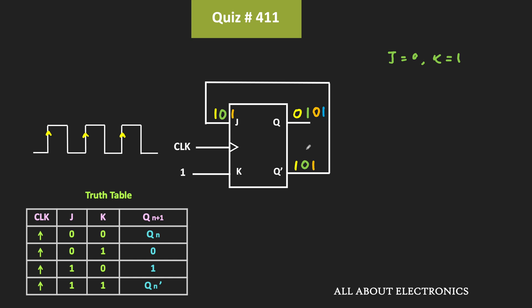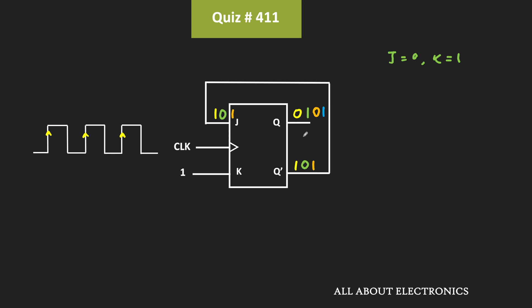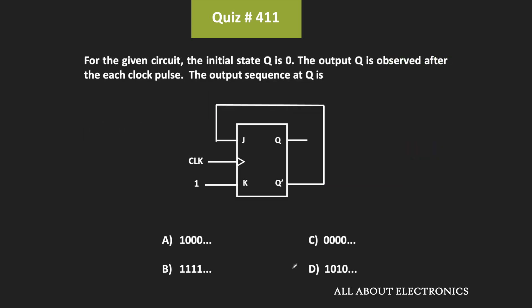So as you can see, at every clock transition, the output of the flip-flop is toggling. That means if we see the sequence at this Q output, then it will be like 101010. And therefore, for the given question, D is the correct answer.